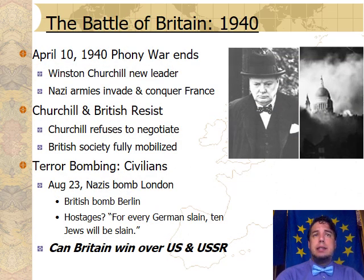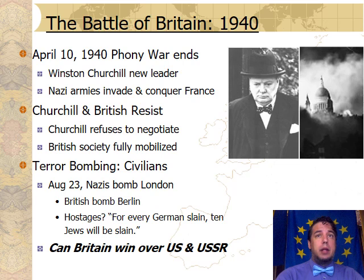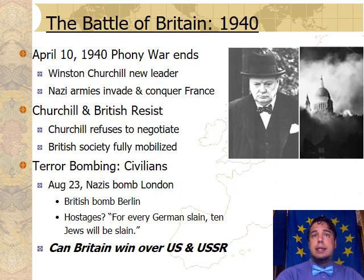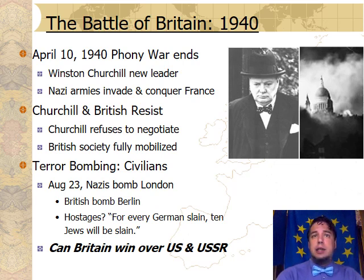Our previous lecture ended in September of 1939, with the official declaration of World War II, where Great Britain and France declared war upon Nazi Germany to protect Polish independence. For the first seven months of this war, journalists and historians referred to it as the period of the Phony War, because while war had been declared, Britain and France weren't actually sending any troops to fight against Nazi Germany. Instead, they negotiated behind the scenes to try and realign the foreign policies of these three different nations as a unified front against the powers of the Soviet Union.